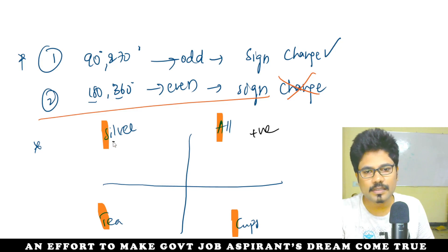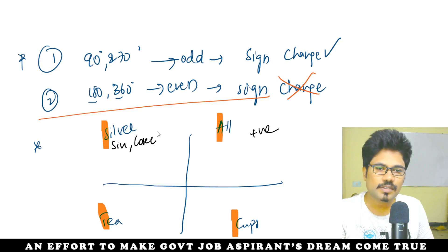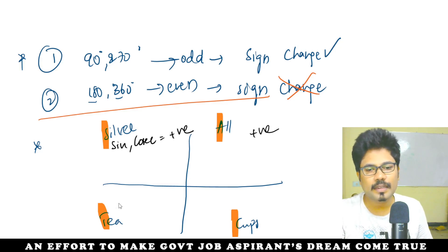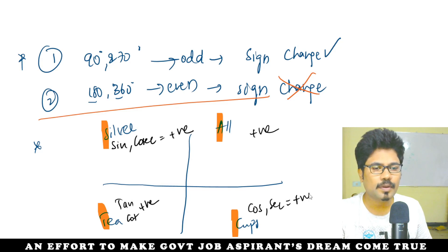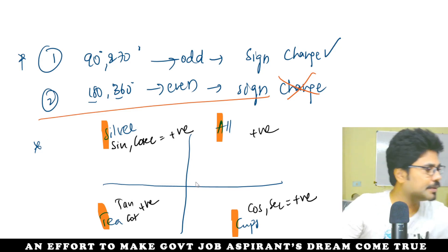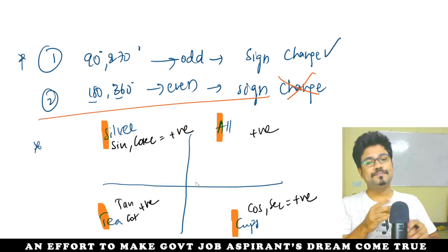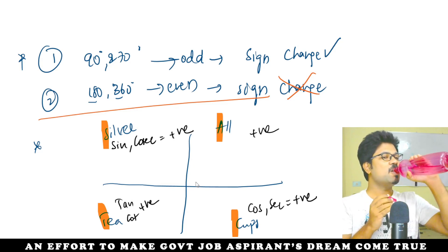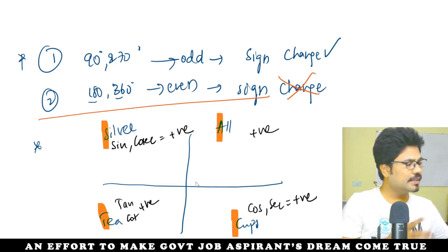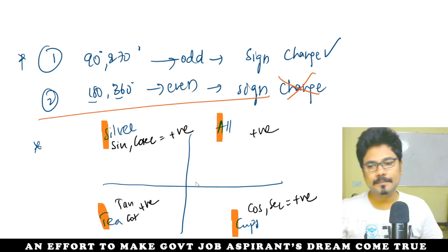So: 'S' means sin and cosecant are positive; 'T' means tan and cot are positive; 'C' means cos and sec are positive. The remaining functions are negative in those quadrants. Got it? This is the sign convention.